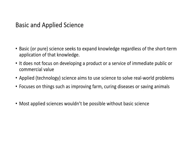From the perspective of purpose, there are two types of science: basic science and applied science. Basic science seeks to expand knowledge regardless of short-term application — it does not focus on developing a product or service of immediate commercial value. Applied science, often called technology, aims to use science to solve real-world problems, such as improving agriculture, curing diseases, or advancing veterinary sciences. Most applied sciences would not be possible without basic sciences.